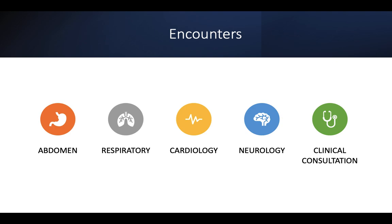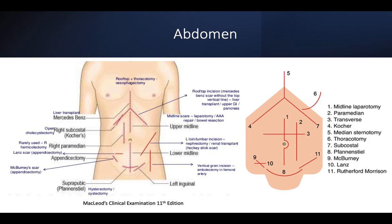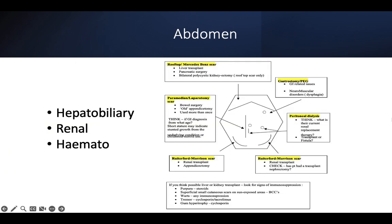Potential encounters can be in abdomen, respiratory, cardio, neuro, or even in clinical consultation. Starting with abdomen — these are all the possible scars we can appreciate during the exam. From top to bottom: we have a rooftop scar, mainly for a lot of procedures. We've also got a midline laparotomy which is supra-umbilical and also infra-umbilical. There's also a paramedian scar, epigastric scar, nephrectomy scar, and lower incision.